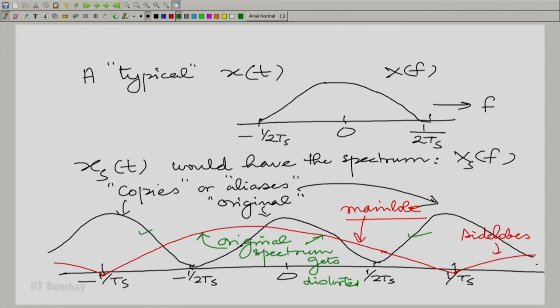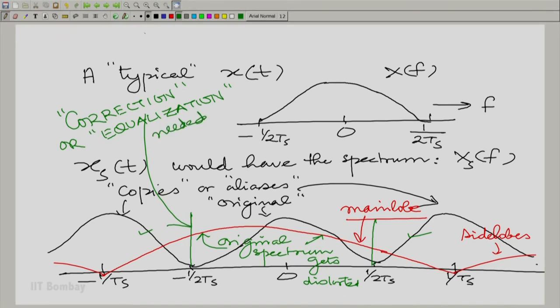Even if you had let the aliases pass, perhaps one could have followed it up with some kind of a filter that removed all frequencies beyond half the sampling frequency. But because of the distortion of the original spectrum, you also need a correction. You need what is called equalization to undo the effect of that main lobe as it lies over the original spectrum. Let us make a note of that. Basically we need equalization here in this part. I will say correction needed, correction or equalization needed. And what is the nature of that equalization? We can write that down very easily.